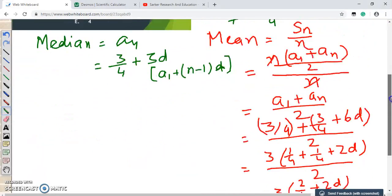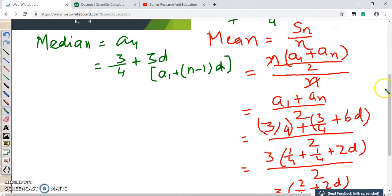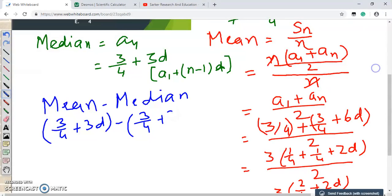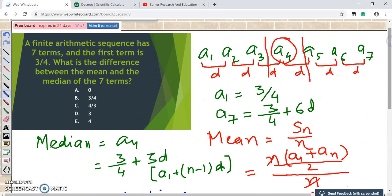Now let us see. This is the median and what is the mean? Wow! The mean is also 3/4 plus 3D. So it is the same 3/4 plus 3D. So what will be the difference between the mean and the median? So mean minus median. Mean is 3/4 plus 3D. The median is 3/4 plus 3D. That means the same number. So the difference will be 0. So actually this is our answer. So let me just see which one is the correct answer here. Well, the first one, A. A is the correct answer. So the difference between the mean and the median of these seven terms is nothing but 0.